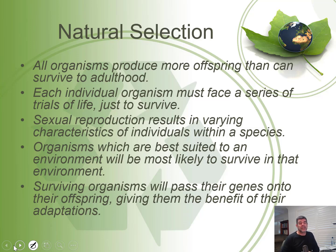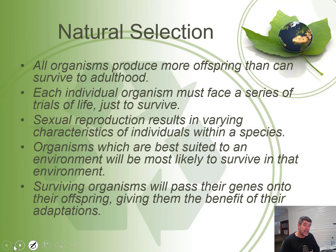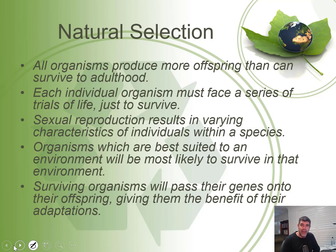The first thing we need to do is be very clear about natural selection. Remember, evolution wasn't Darwin's idea, but natural selection was the theory that Darwin put forward to explain evolution. Theories are explanations for observations that we make, so natural selection is Darwin's theory for why those changes have come about.